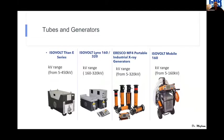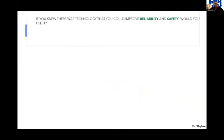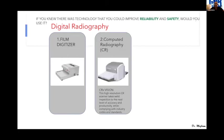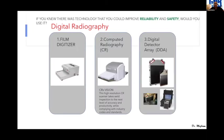If we are searching for reliability and safety, the first answer should be digital radiography. Digital radiography is separated into three different sections: the first one is film digitizer, the second is computerized radiography (CR), and the third is digital detector array (DDA). All three are considered digital radiography under different codes, names, or specifications.